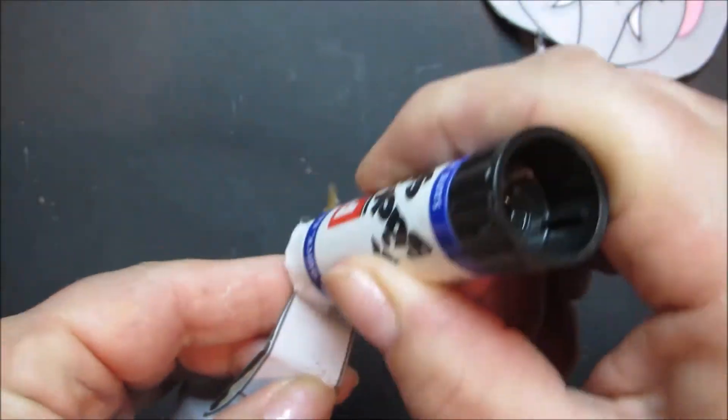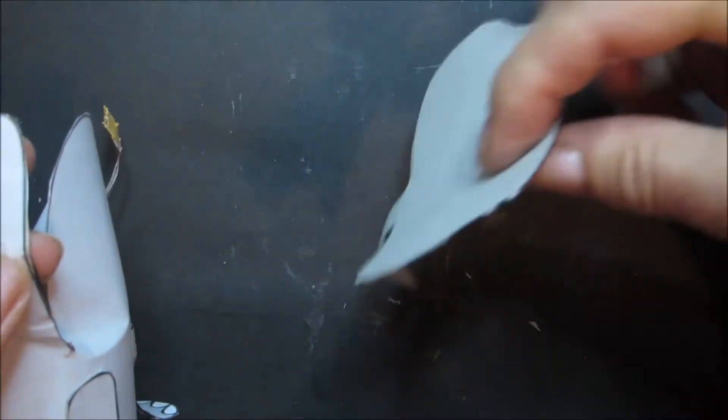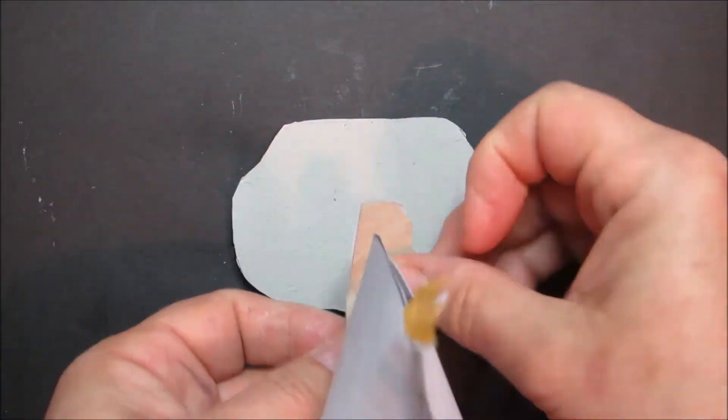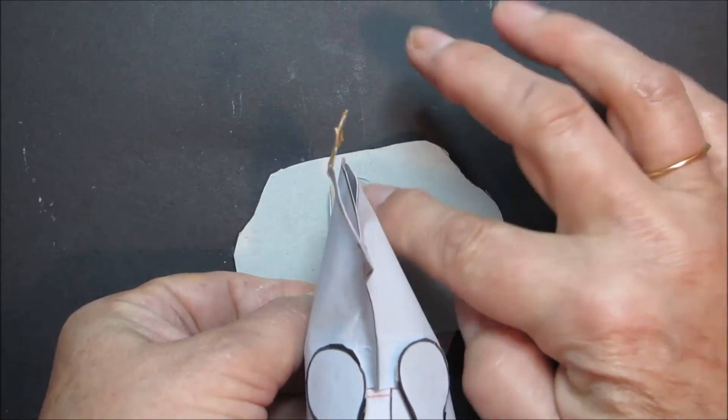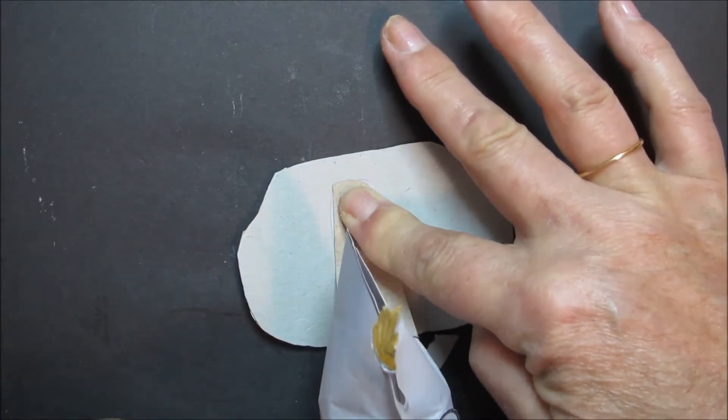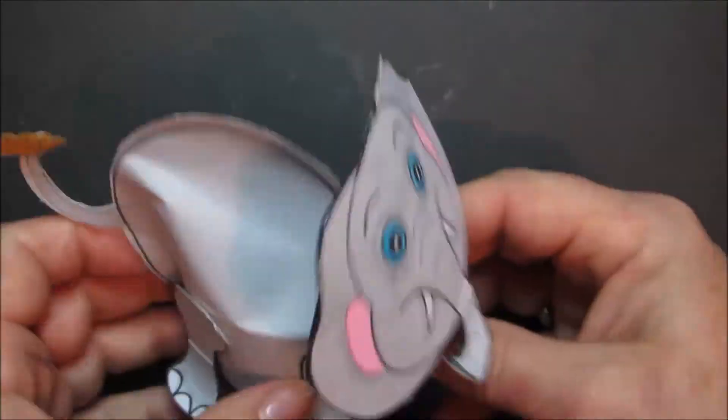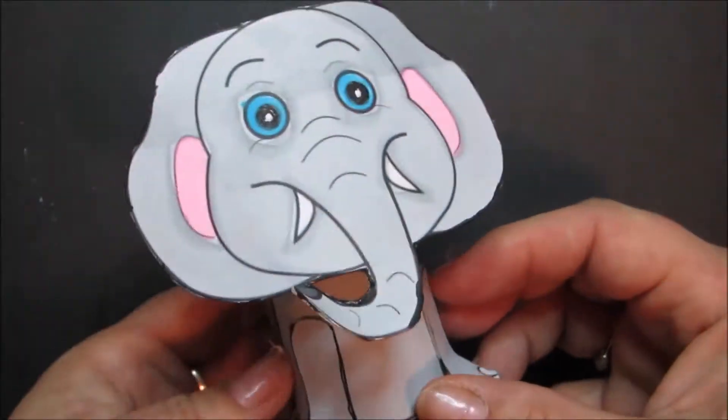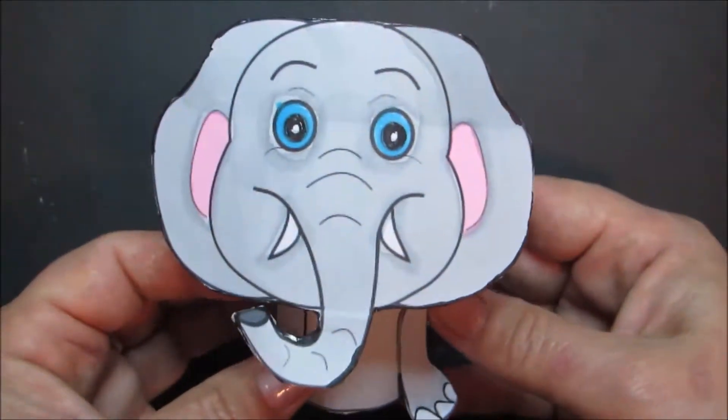Then we're going to apply the glue to the top part only. Turn the head over. Position our neck. If you want your elephant's head to tilt, tilt slightly, and then press down. Hold and let it dry. And there we have our finished elephant puppet.